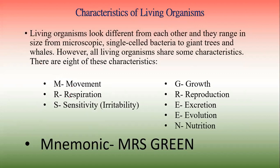We have movement, respiration, sensitivity — sensitivity is also called irritability — growth, reproduction, excretion, evolution, and nutrition. I have identified the first letter of each of those characteristics to create a mnemonic named Mrs. Green, that would help you remember those characteristics easily.